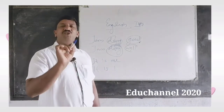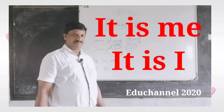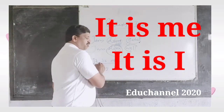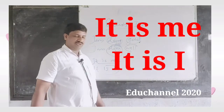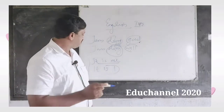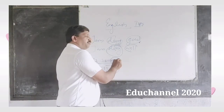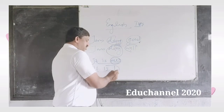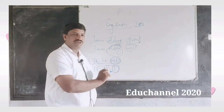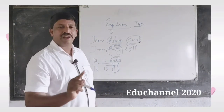Another common example: 'It's me' and 'It's I' — which is right and which is wrong? In spoken language we say 'It's me,' but in formal or written language we should say 'It is I.' The reason is that 'me' is an objective pronoun from the first person, while 'I' is a subjective pronoun from the first person.